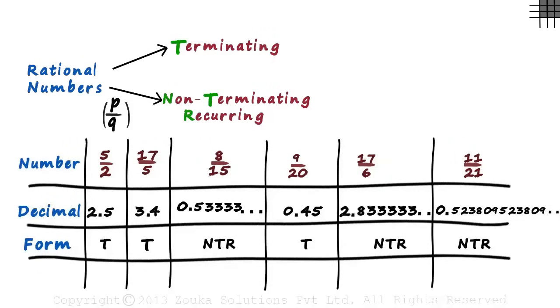All we need to do is look at the denominator. Yes, even if we just look at the denominator, we can figure out if it's a terminating or non-terminating recurring. The denominator of the first number is 2. And the denominator of the second number is 5. We just need to keep a small thing in mind.